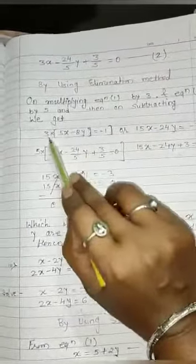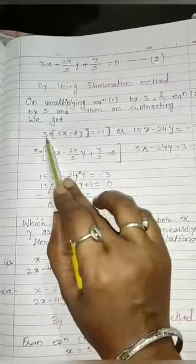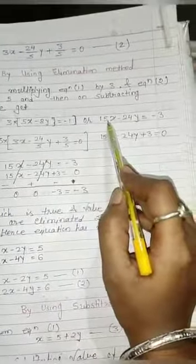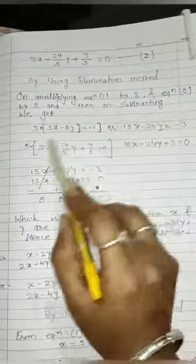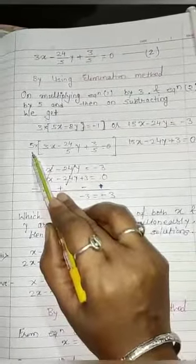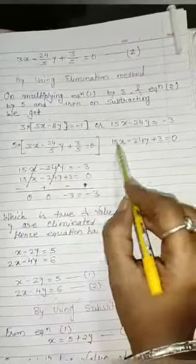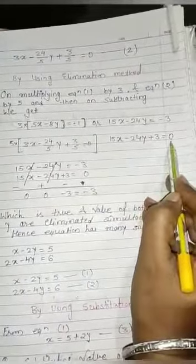And then on subtracting, we get from equation 1, multiply by 3. You will get the answer 15x minus 24y is equal to minus 3. Same, multiplied equation 2 by 5: 15x minus 24y plus 3 equal to 0.